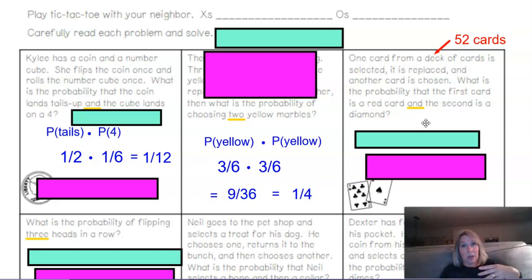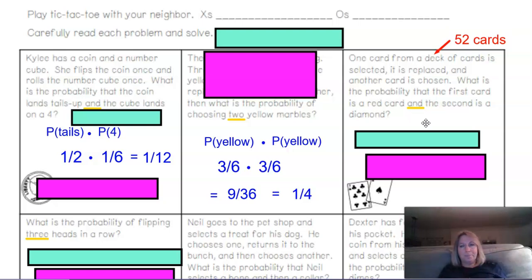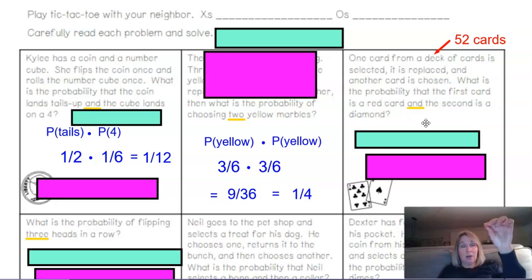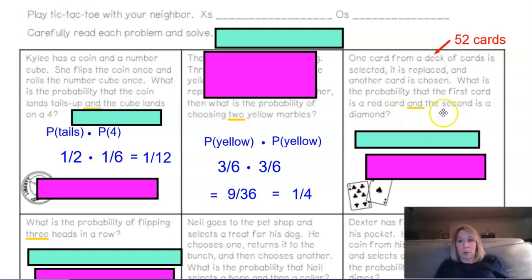Since there are four different suits — diamonds, hearts, spades, clubs — a fourth of the cards are in each category, with 13 cards each, going from 2 through 10, then Jack, Queen, King. So the probability of red is 26 out of 52, which is 1/2. When it says 'and,' we multiply the probabilities. The probability of getting a diamond is 1/4 of the deck. So 1/2 times 1/4 is 1/8.